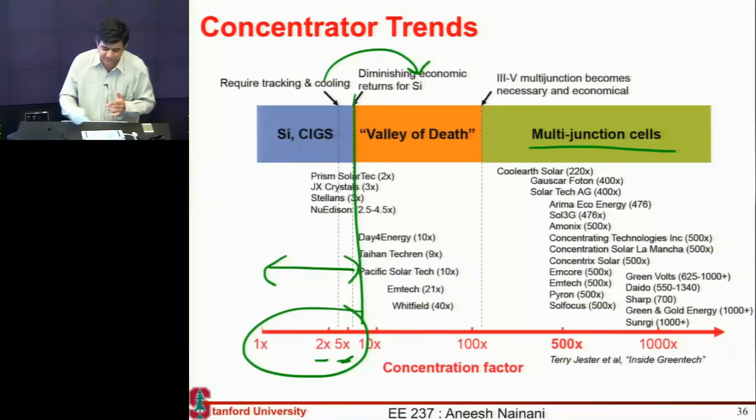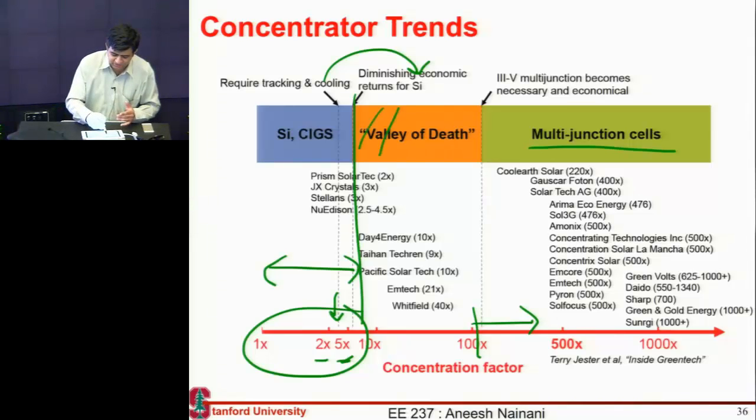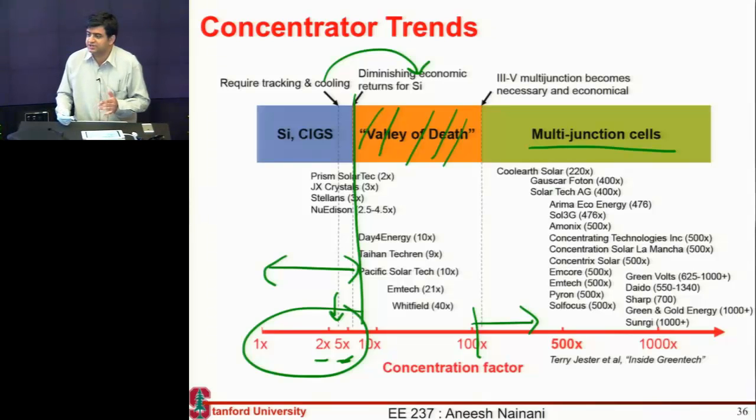If you want to go beyond that, then you must use a 3-5 cell. And if you have a 3-5 cell and you are using a concentration of 5x, it does not make economic sense because the cell is so expensive. So if you're using a 3-5 cell, you need a concentration of at least 100x or 300x to make it economically feasible to use such an expensive cell. So you have often this valley of death in terms of concentration. People either make concentrators which are 2x, 3x, or 5x, or they make one which are more than 100x. In between, there's not, silicon does not make sense to go above concentration of 10x. Similarly, 3-5 cells, they don't make cells to go below concentration of 100x.